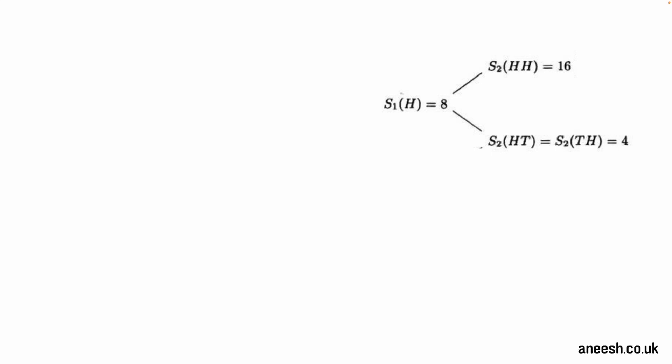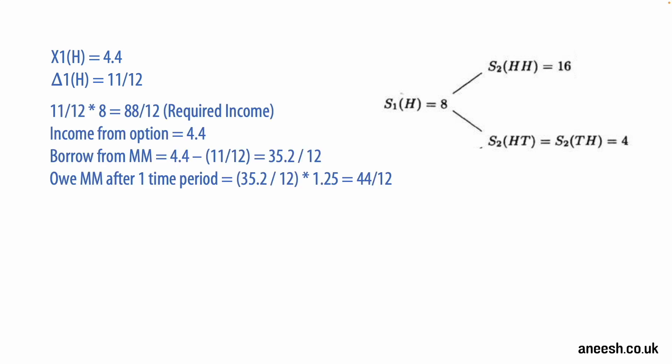Let's play this exact scenario out so we can see how we are perfectly covered using the binomial model. So the option is sold for 4.4. The delta of 11 over 12 will require income of 88 over 12 to finance the correct delta as the stock price is 8. Therefore 88 over 12 minus 4.4 is 35.2 over 12, and that's how much must be borrowed from the money market to fund the purchase of the delta amount of stock. And then at time 1 we will also owe the money market 35.2 over 12 multiplied by 1.25, and that's going to be 44 over 12. So after one time period, that is how much we owe the money market to fund our purchase of the stock.